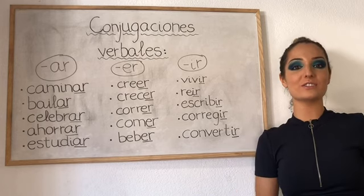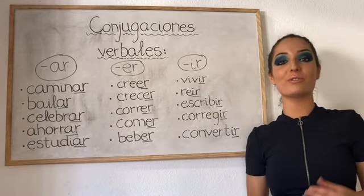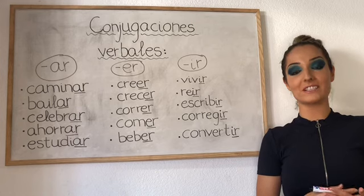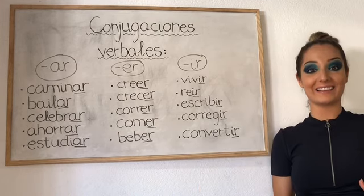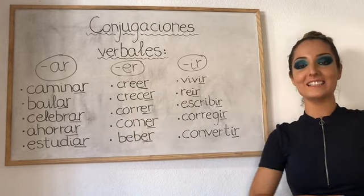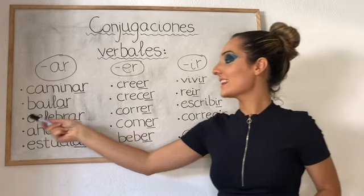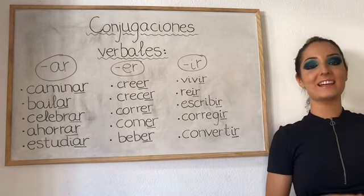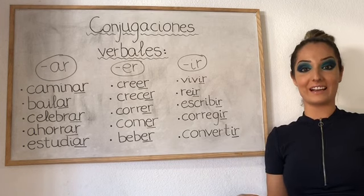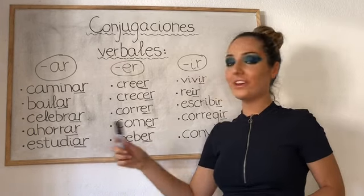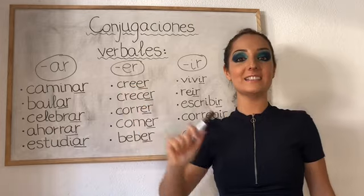This is going to be very simple for you as soon as you understand this. Here I wrote down some examples of the first conjugation — verbs in the infinitive ending in AR. For example: CAMINAR, to walk; BAILAR, to dance; CELEBRAR, to celebrate; AHORRAR, to save; ESTUDIAR, to study. As you can see, all of them are ending in AR.